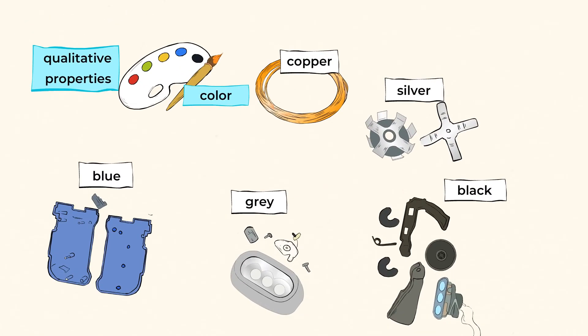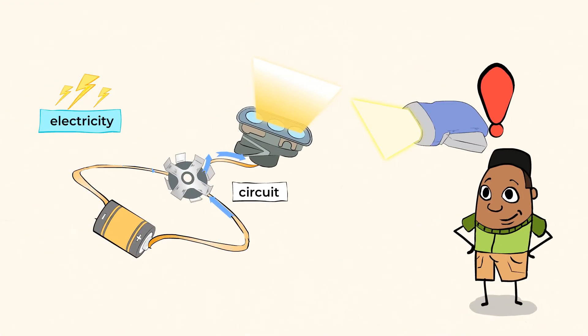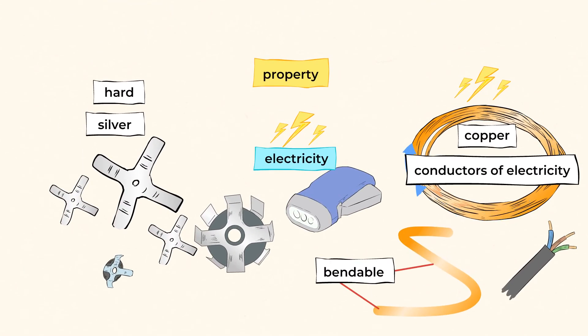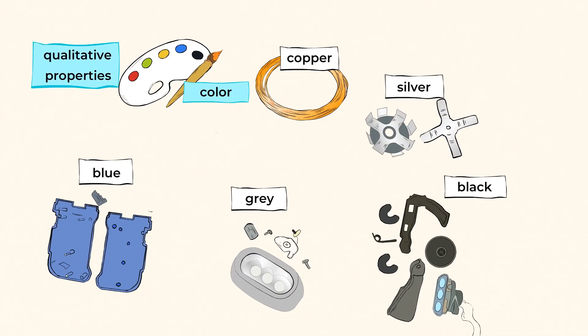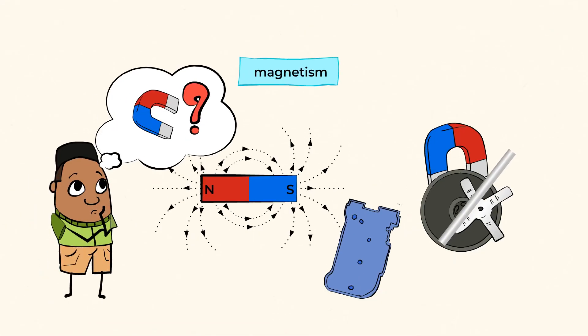I've made observations about the properties of all the parts of my flashlight, and I was able to test things like conductivity, hardness, color, magnetism, and more. I made predictions and was able to test them out to draw conclusions.